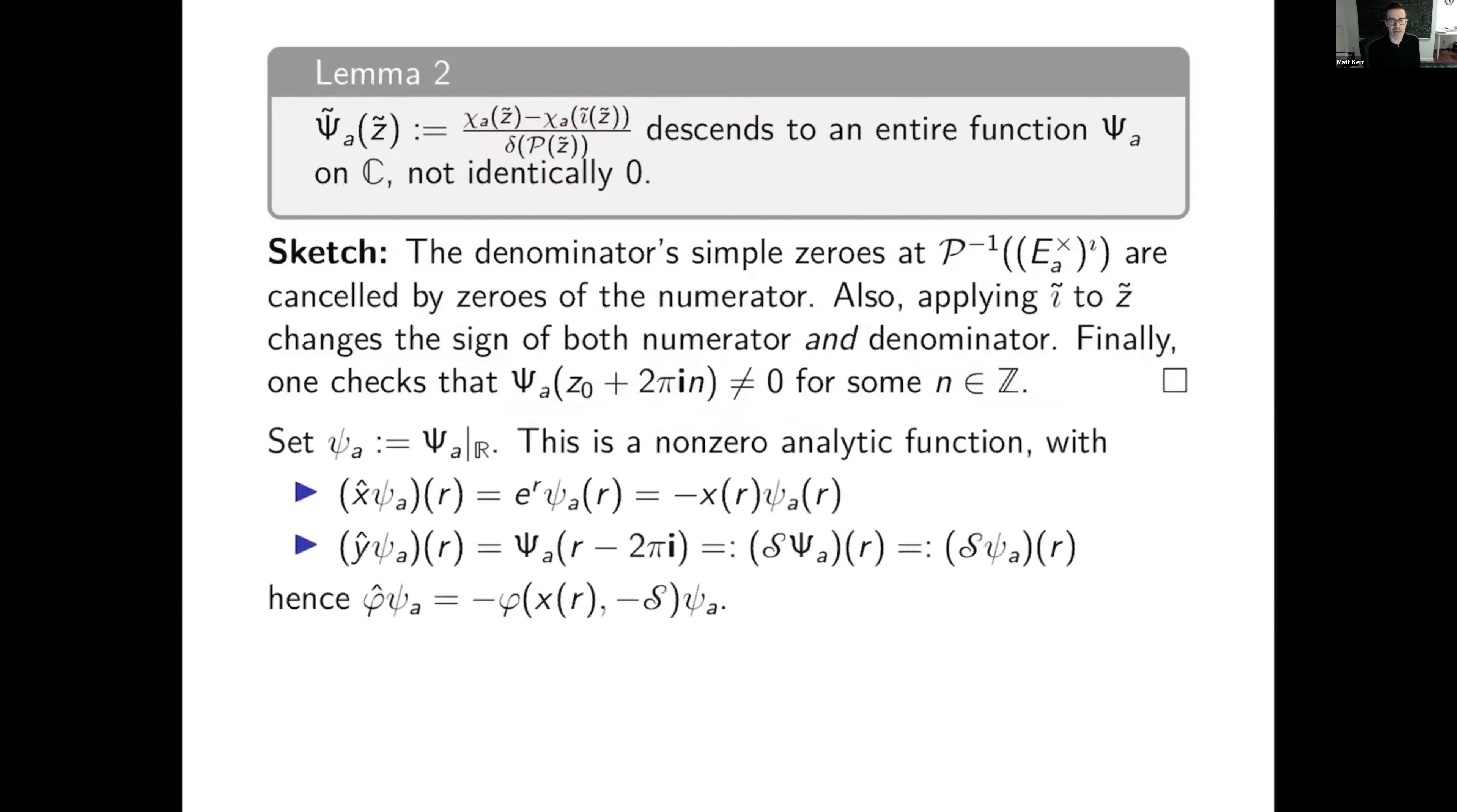Now I restrict my function on C, my entire function that I just constructed, to the real line. This is a non-zero analytic function. And we have x hat applied to psi a is just e to the r by definition, but e to the r is minus x of r by our construction. Y hat, on the other hand, is the shift operator. And so we get what I'll call s applied to psi a, which by abuse of notation I'll also call s applied to little psi a. So that tells me that phi hat applied to psi a is minus the Laurent polynomial evaluated x of r minus the shift operator applied to psi a.